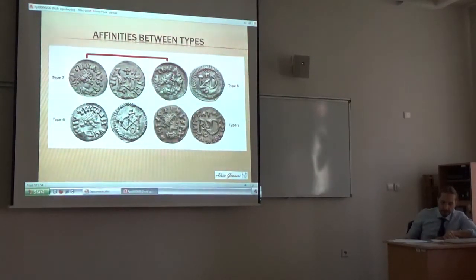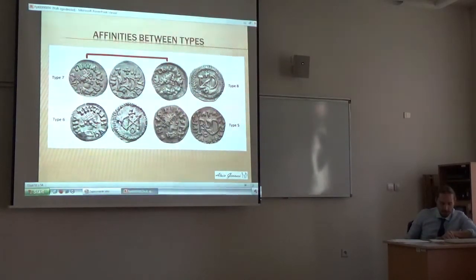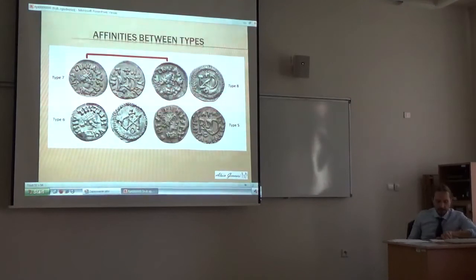There are affinities between Type 5, Type 6 in the name of Justin I, Type 7, and Type 8 in the name of Justinian I. Types 7 and 8, as I mentioned, are even die-linked by the obverse die. These examples seem really to force us to shorten the period of minting of the Sirmium group.